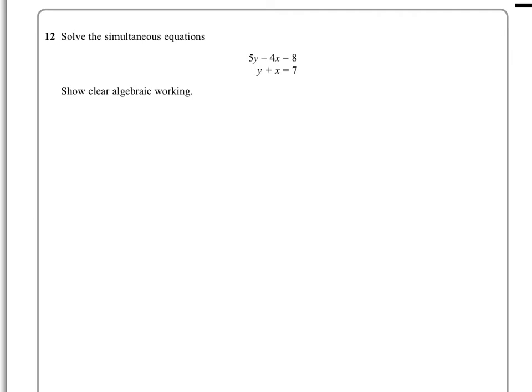So what we can say, we can call the top equation 1, and we'll call the bottom equation 2. And what we do from equation 2 is we just rearrange for any of the two variables. So let's just do it for x, therefore x would equal 7 minus y.